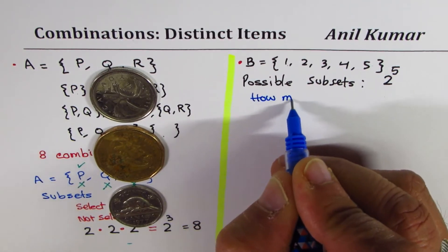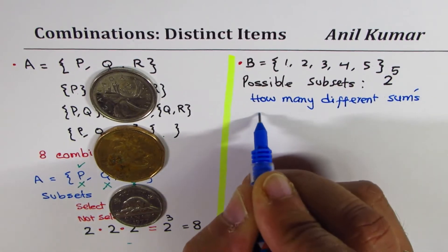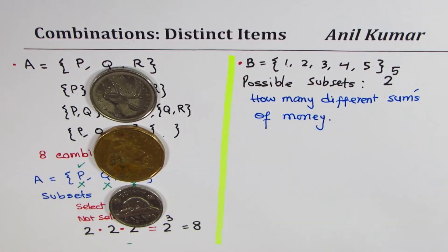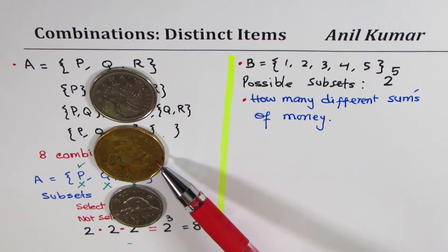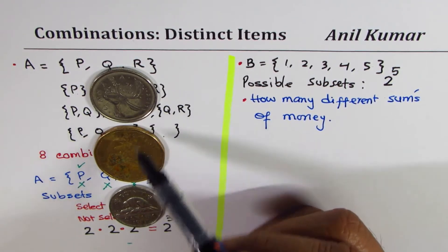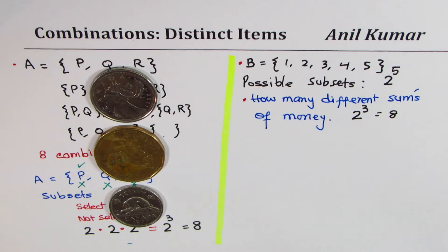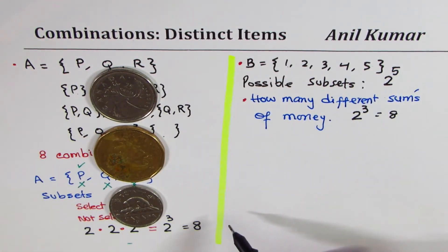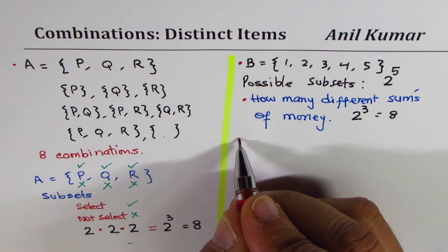how many different sums of money can we make? That is what we need to figure out. Now, as you can see, we may select a quarter. We may not select it. We may select a dollar. We may not select it. We may select a nickel. We may not select it. So for each, we have two choices. And therefore, we have 2 to the power of 3. 2 times 2 times 2. So it is 2 to the power of 3 choices. That is 8. So if we have 3 coins, there are 8 different combinations which can be made and we can get the result.